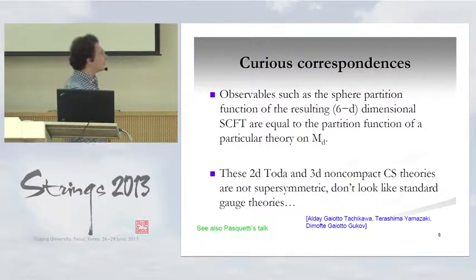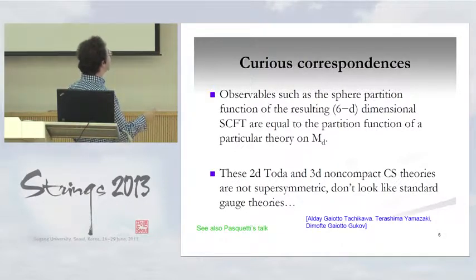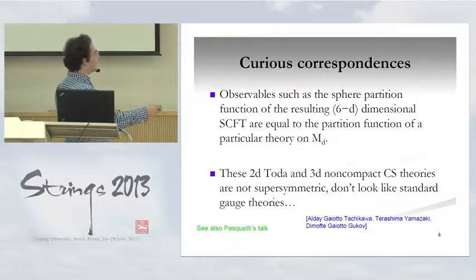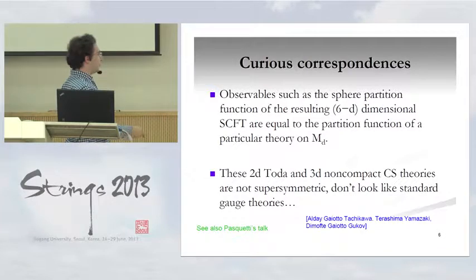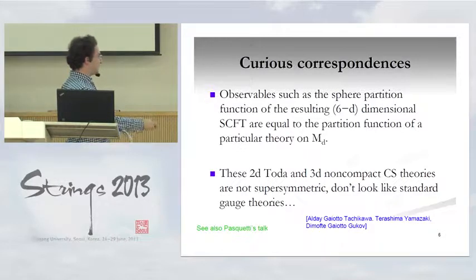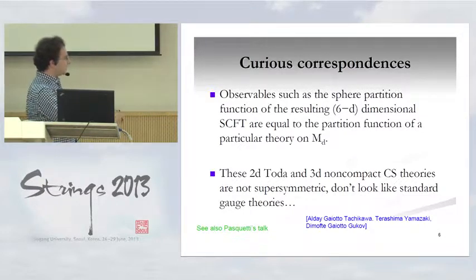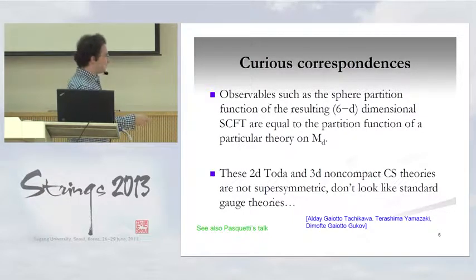There's an interesting duality that says that some observables, such as the sphere partition function of the resulting theories in 6-D minus D dimensions after this supersymmetric reduction on the D-dimensional manifold M, equals the partition function of some particular theory on this space. In the case of reducing on a Riemann surface to get a 4D N=2 theory, there's the AGT correspondence, relating it to the 2D Toda theory on the Riemann surface. In the 3D case, one expects to get non-compact Chern-Simons theory — that's what I'll derive today.